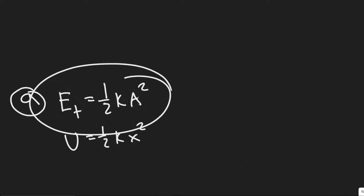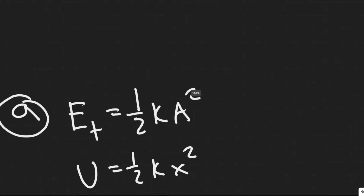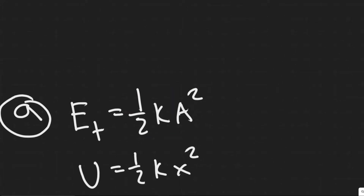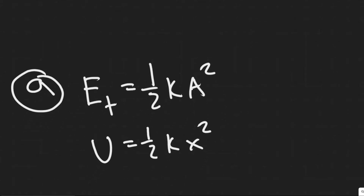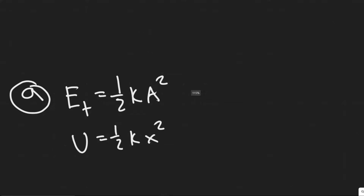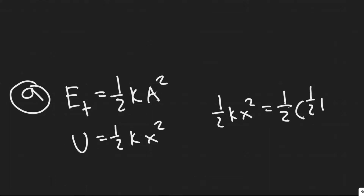One formula is for the total energy stored within the spring: one-half kA squared, where A is the amplitude of our simple harmonic oscillation. And then the formula for the potential energy is one-half kx squared. Basically the way we're going to do it is by setting them equal: one-half kx squared equals one-half of one-half kA squared.